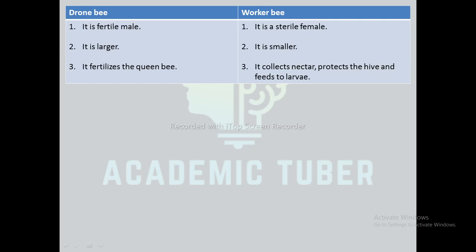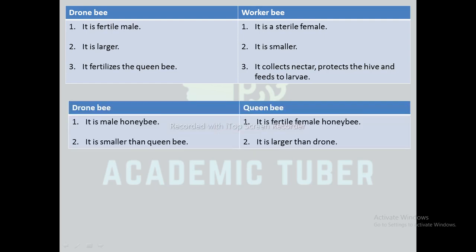Differences between drone bee and queen bee: the drone is a male honeybee whereas the queen bee is a fertile female honeybee. The drone is smaller than the queen bee, while the queen bee is larger than the drone. This brings us to the end of this unit on the life cycle of bees. I hope this video was useful to you. Please share with your friends, subscribe to the channel, and drop any queries in the comment section. See you in the next video — thank you!